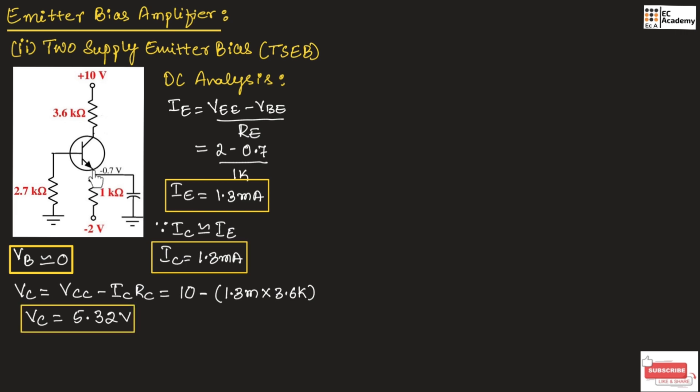Here, the voltage across emitter terminal VE can be written as VB minus VBE. If we substitute the values, VB equals 0 and VBE is 0.7V. From this, we can write VE equals minus 0.7V.